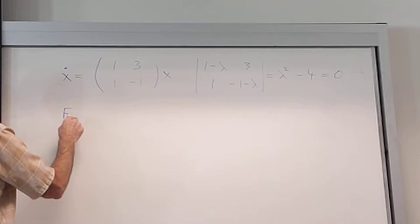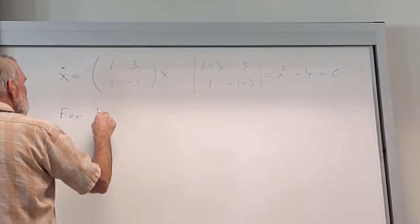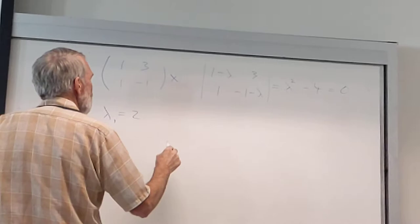Alright, so what's one of the eigenvalues? 2. 2, and we do lambda 1 equaling 2. Alright, so we're now, if we put 2 in there.